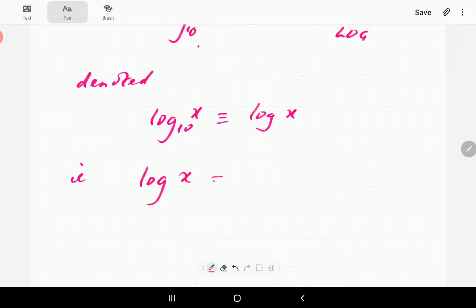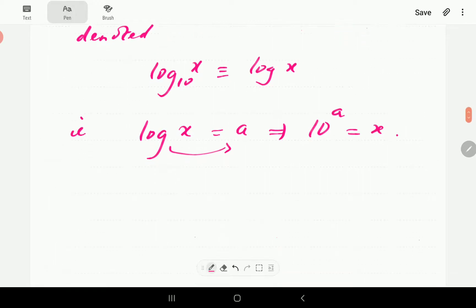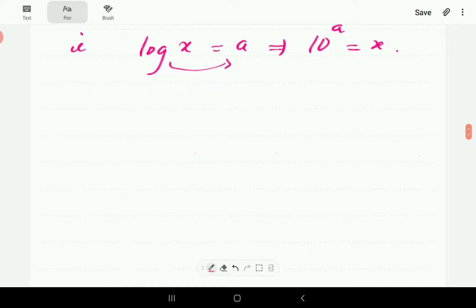That means if log x is equal to a, then 10 to the power a is equal to x. So that is base 10, which is the common base, which leads to the common logarithm. The number e is actually approximately equal to 2.718. This number is called Euler's constant.